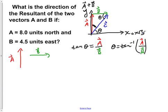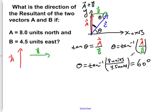If we now plug in the values for A and B, we would find that theta is equal to tan inverse of 8 units over 4.5 units. And if we took the tan inverse of that, we would find that theta is equal to 60 degrees. Which is this value here. Now this was method one.